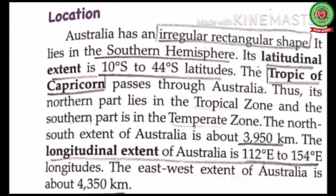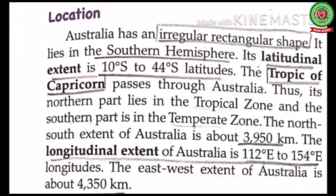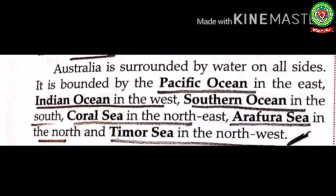The north to south extent of Australia is about 3,950 km. The longitudinal extent of Australia is 112 degrees east to 154 degrees east. The east to west extent of Australia is about 4,350 km.